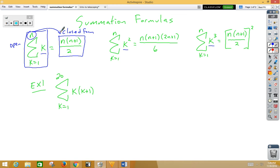So, in this original problem, I've got k times k plus 1. Well, we know that we can do a little algebra there, and we can think of that as from 1 to 20 of k squared plus k.